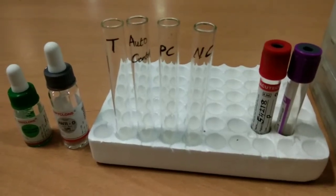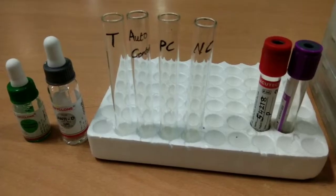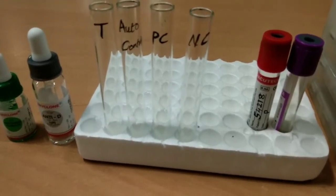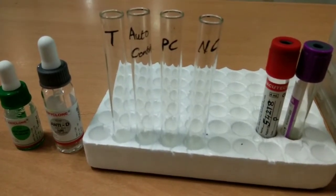Hello friends, today I am going to do the indirect Coombs test. Indirect Coombs test is also called the indirect antiglobulin test. This test is used to detect incomplete or unexpected antibodies in the patient serum.